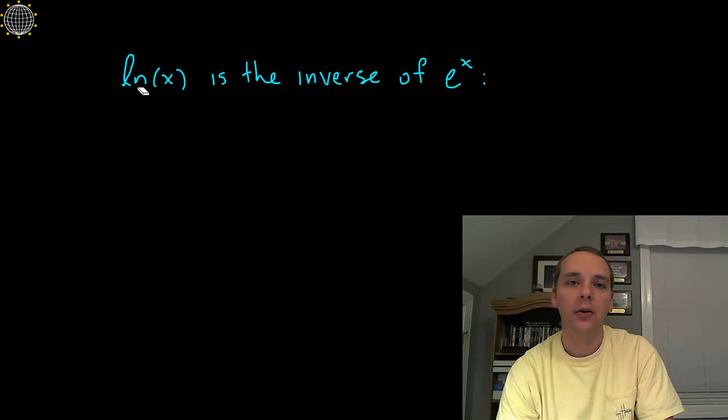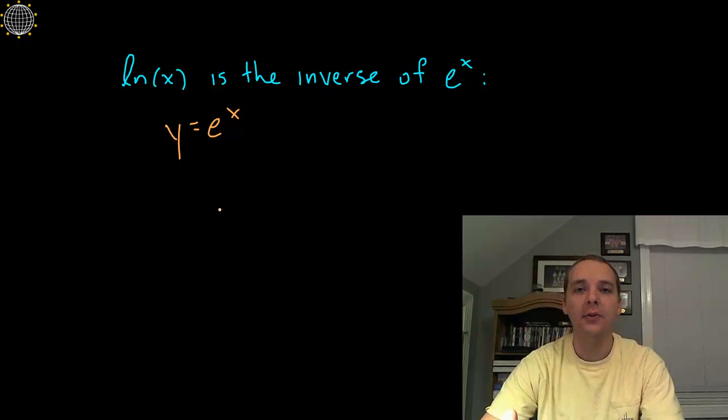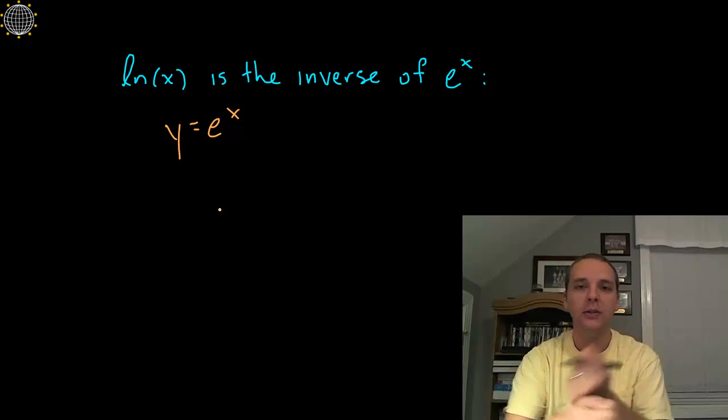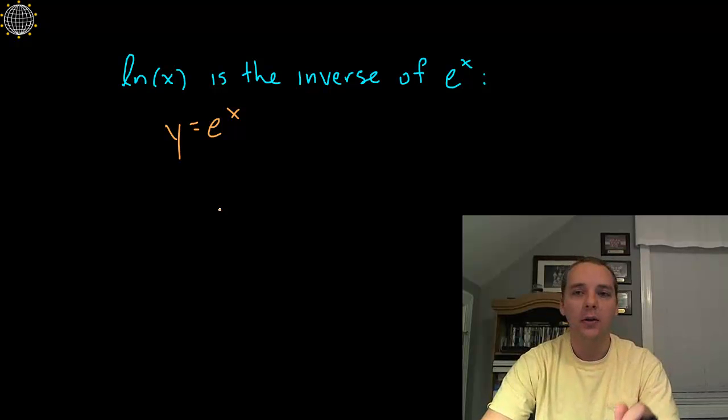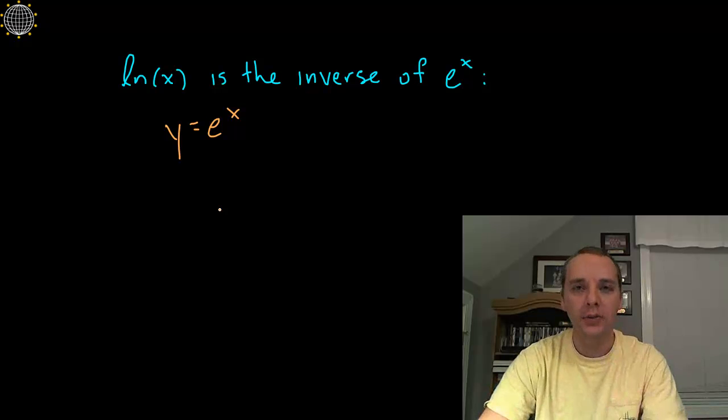We talked about earlier about the natural log being the inverse of e^x. Let me show you how that math plays out. If you have y = e^x and that's your exponential function, you remember what happens when you take the inverse of a function. Basically, in effect, the x and the y switch places. So a point (2,7) will become a point (7,2) on the inverse relationship.